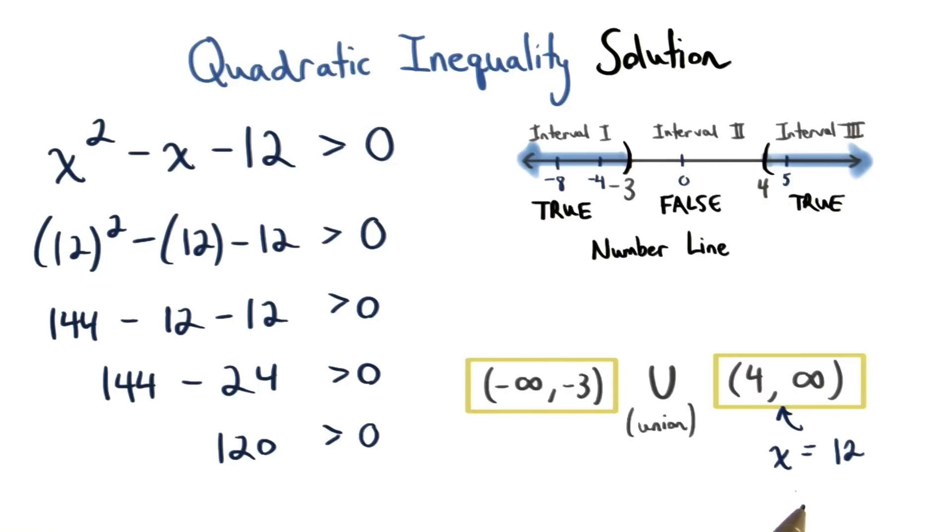So if I chose x equals 12, I know that's between 4 and positive infinity. So I could plug in 12 for x and then I would get the value 120. We know 120 is greater than 0, which means that this statement is true.